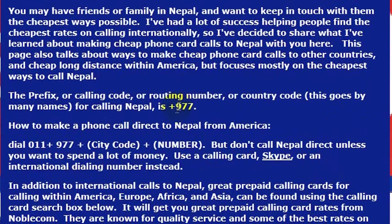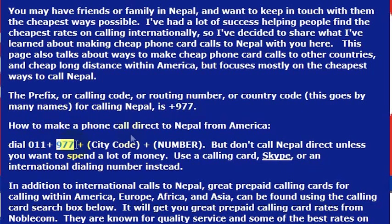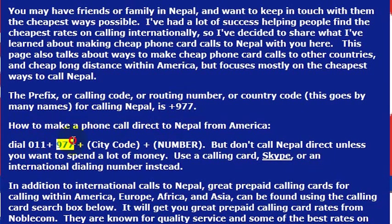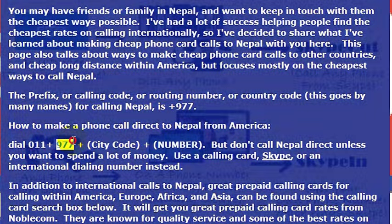In any case, if you want to reach Nepal calling from the United States, what you would do is dial 011 — that gets you an outside international line — and then you would dial 977. 977 is the country code for Nepal. So 011 gets you an outside line to an international destination, and then 977 lets you call Nepal.